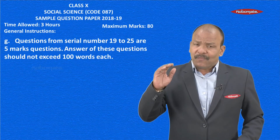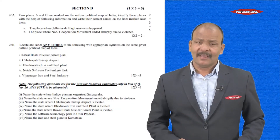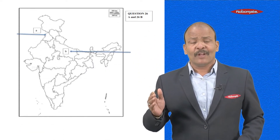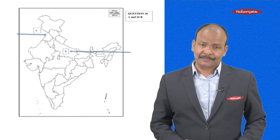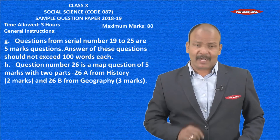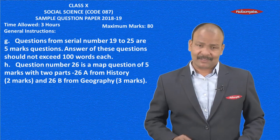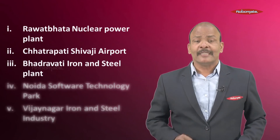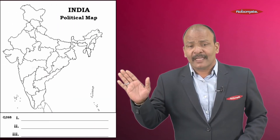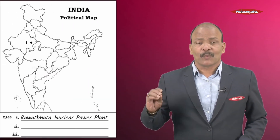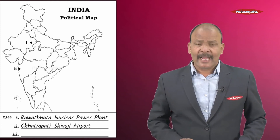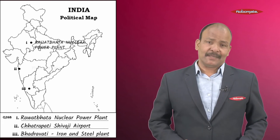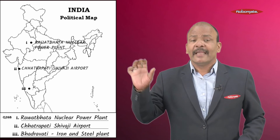The final section is Section D, which has questions based on maps. These map questions will be from both Geography and History. For Geography it will be three marks and for History it will be two marks. For Geography questions, you will be given five questions and out of that you need to answer three. You must mark everything with pencil on the map provided, show an index, and labeling should be done in capital letters.